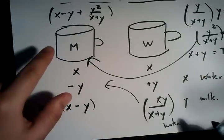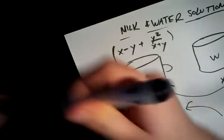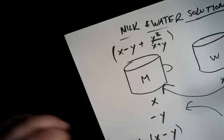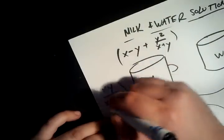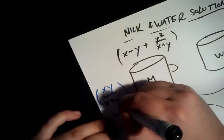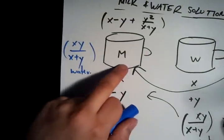So, and that goes in here. And that's the only water in here. So we know, let me switch colors to blue for water. We know that there's xy over x plus y amount of water in the milk jug.